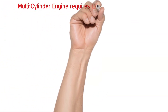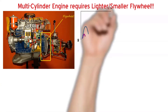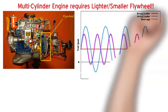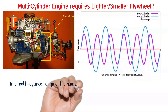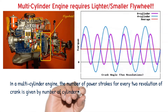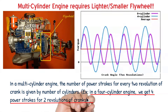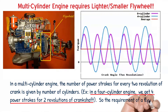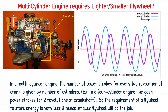Now let us take the case of a multi-cylinder engine. This is a typical four-cylinder engine that is used in an automobile. As you can see the location of the flywheel. On the right-hand side diagram, we have the turning moment diagram. The aqua blue line shows the turning moment diagram for a four-cylinder engine. In a four-cylinder engine, we get four power strokes for every two revolutions of the crankshaft — that means for every half a rotation, we get one power stroke.